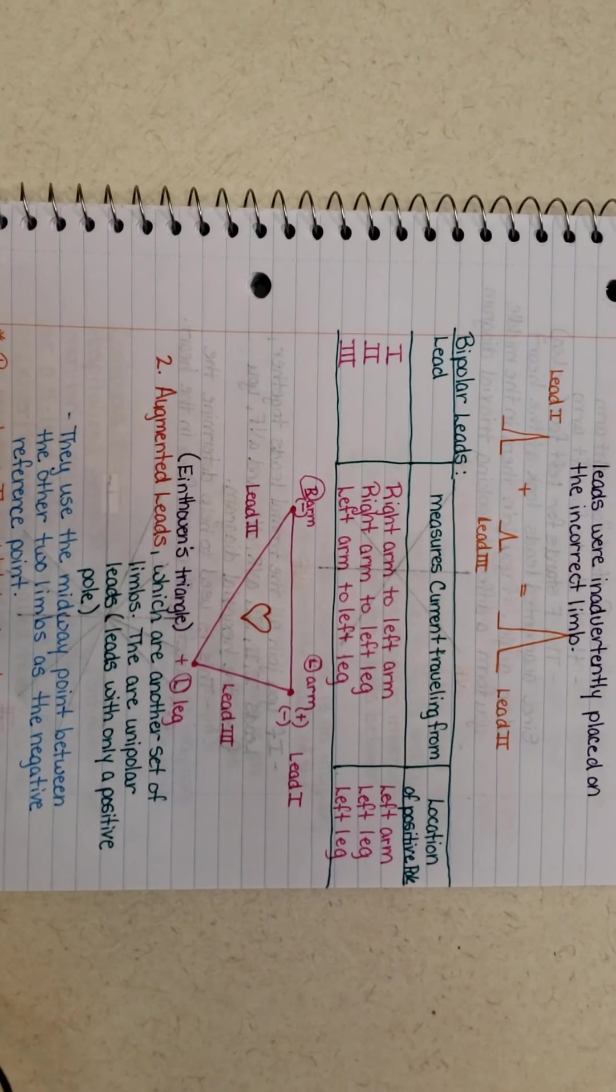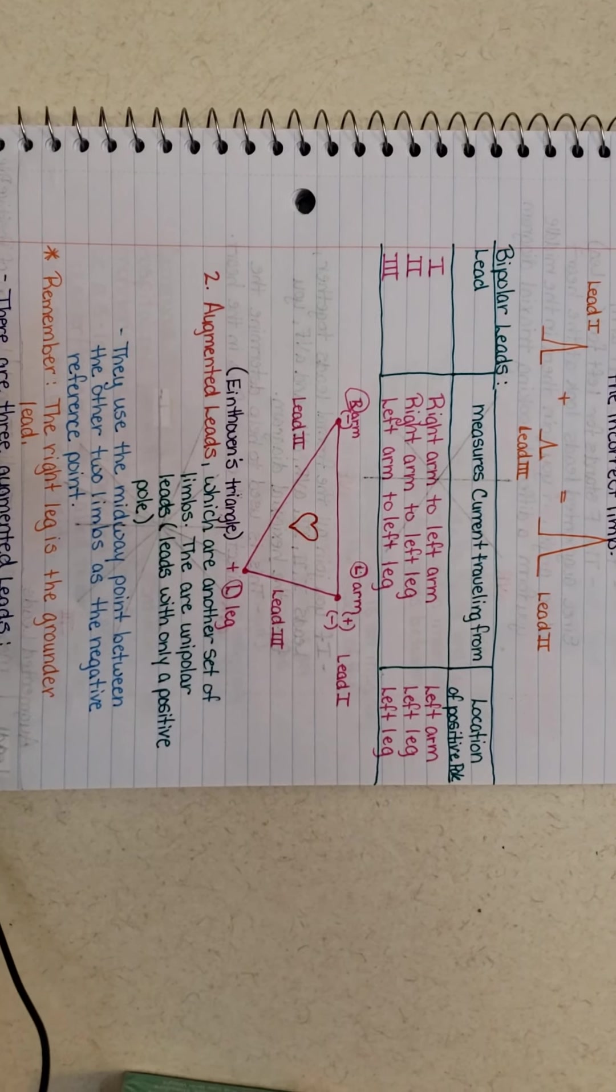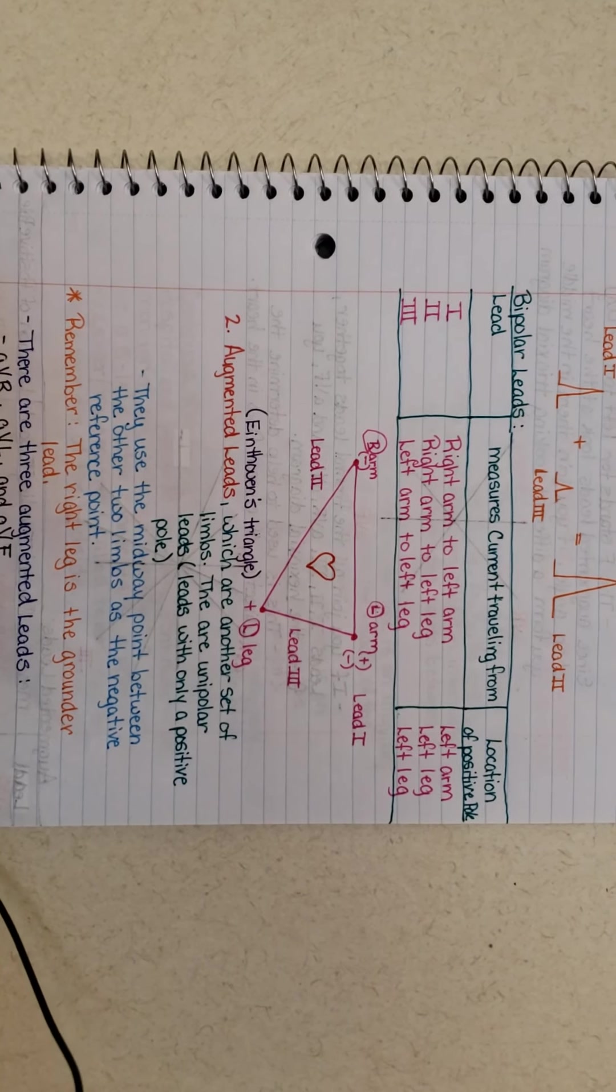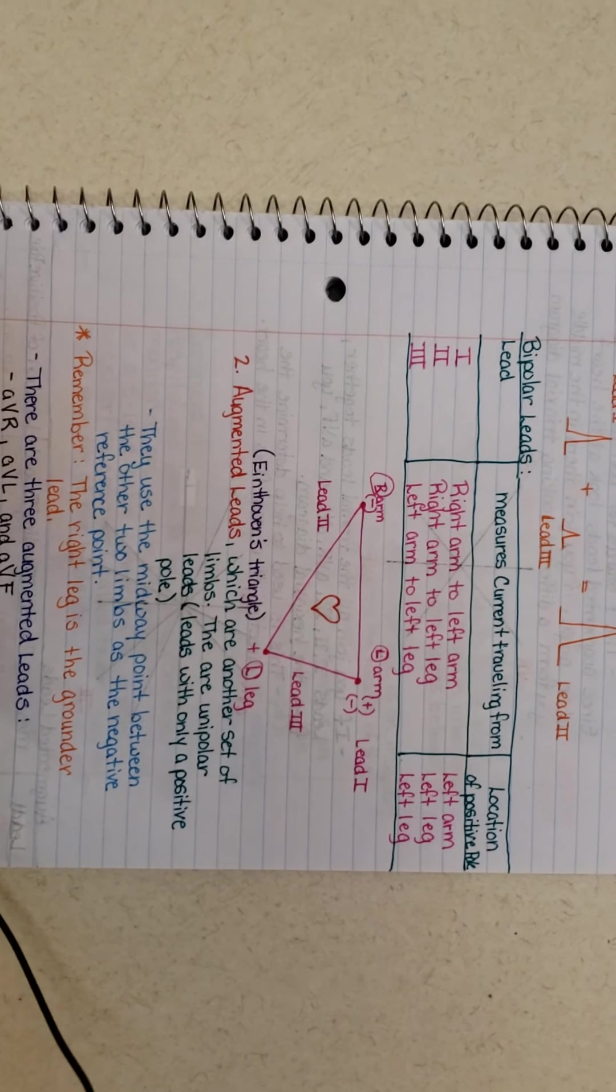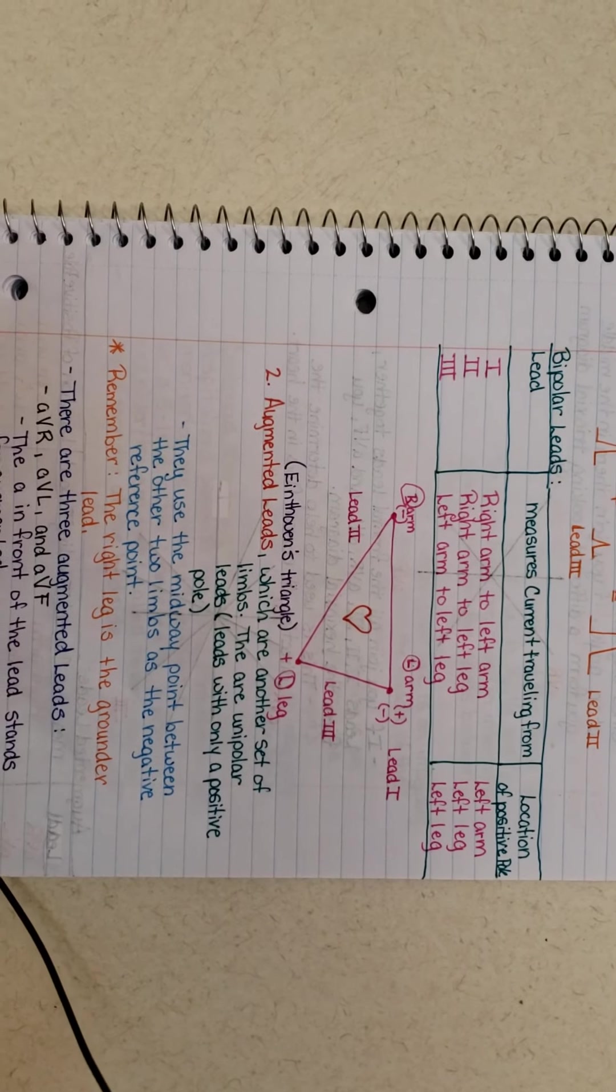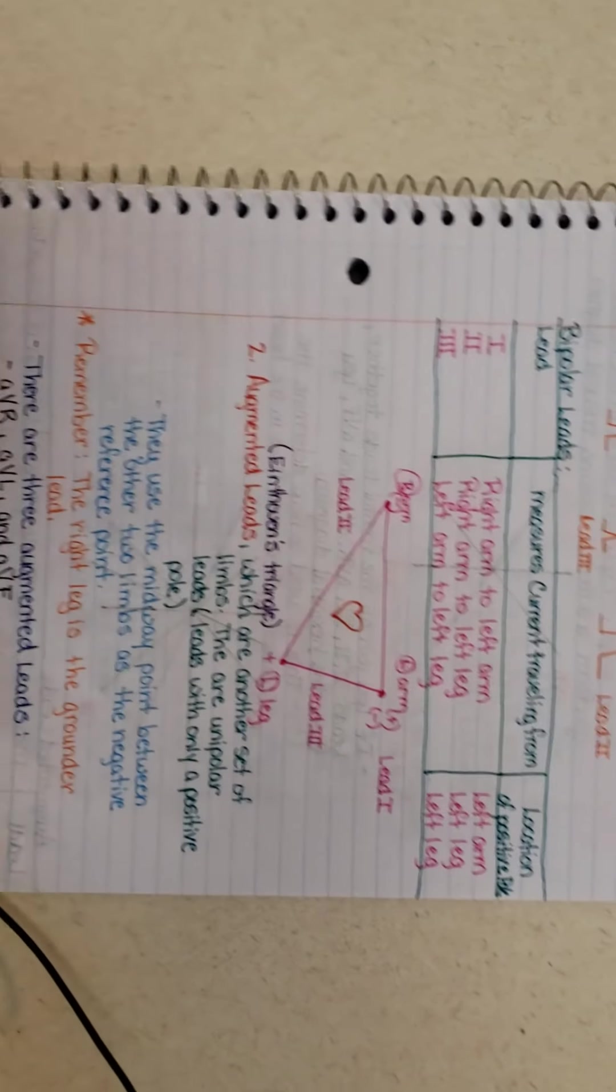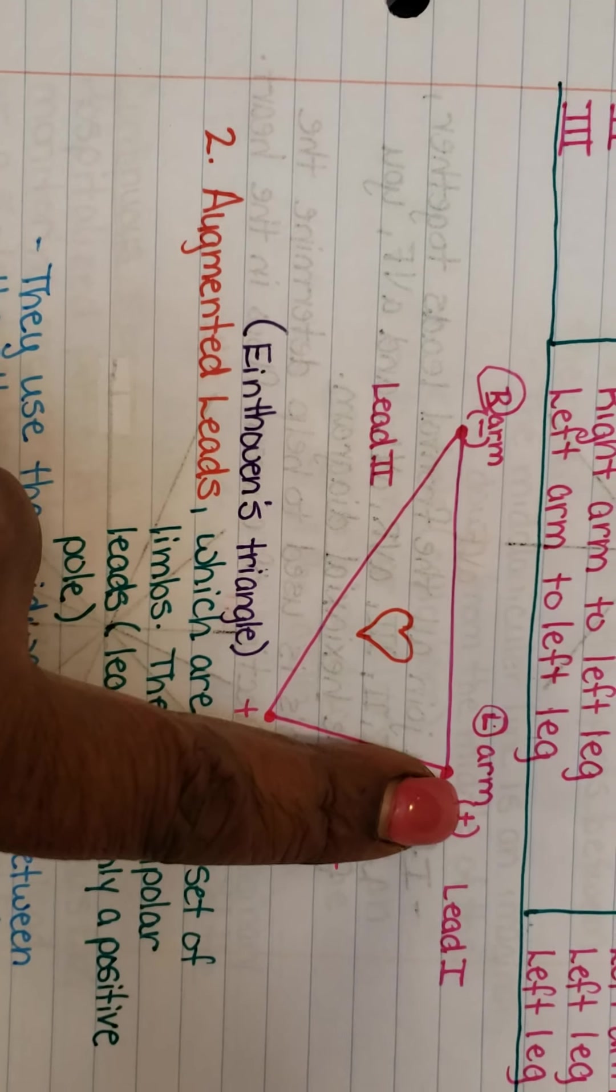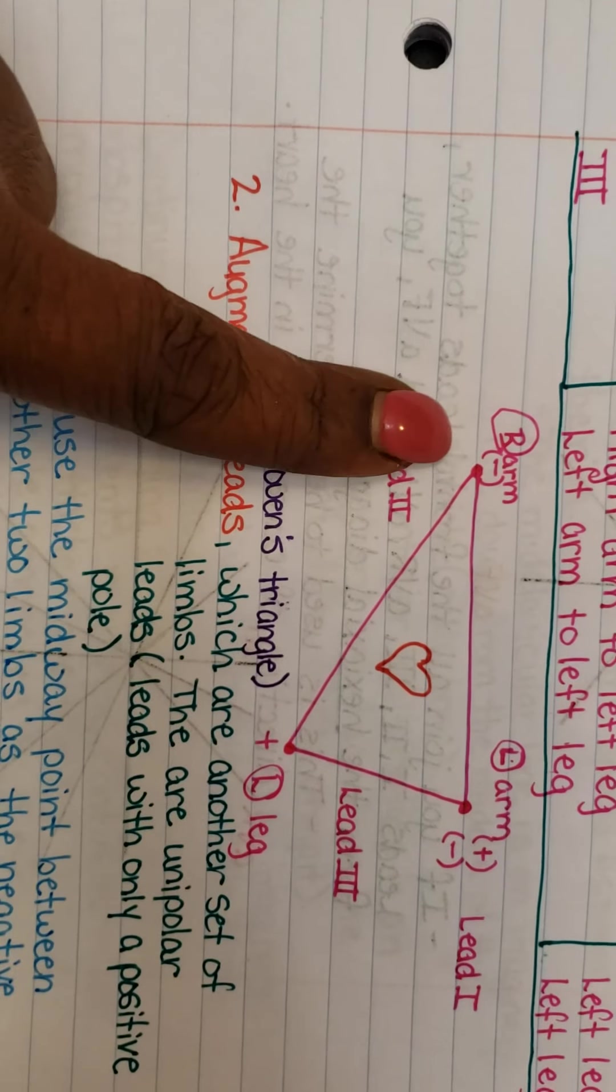So your bipolar leads are leads one, two, and three, which lead one reads from right arm to left arm, which the positive pole is your left arm. Lead two reads from left arm to left leg, which makes your left leg positive. And lead three reads from right arm, which means now instead of your left arm being positive, now it's negative and it's reading to left leg.